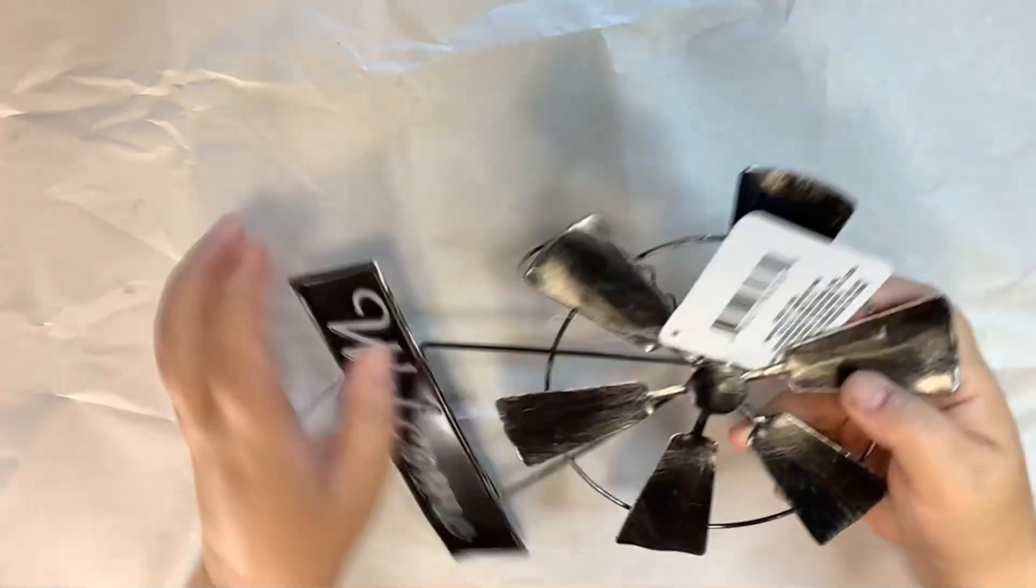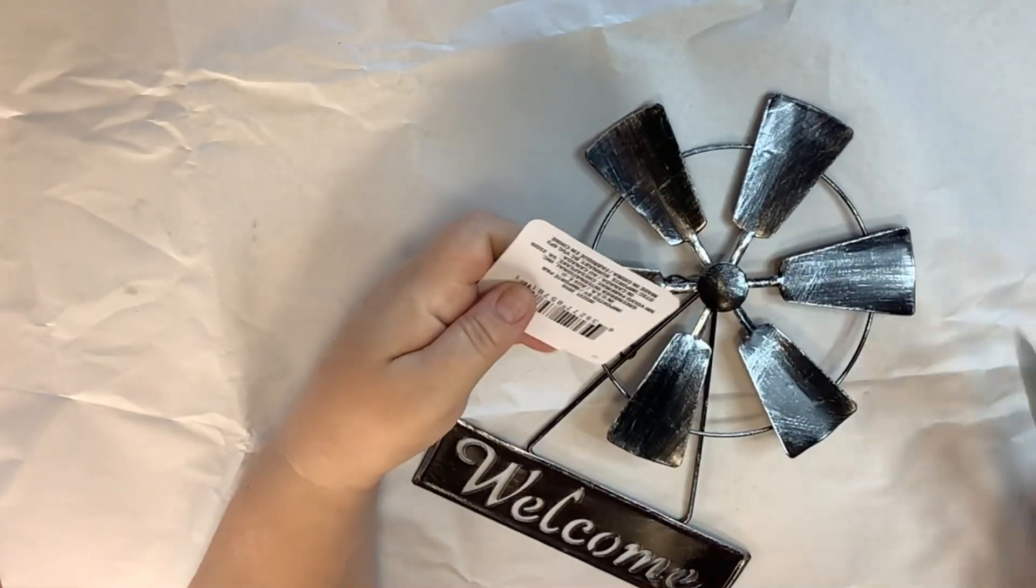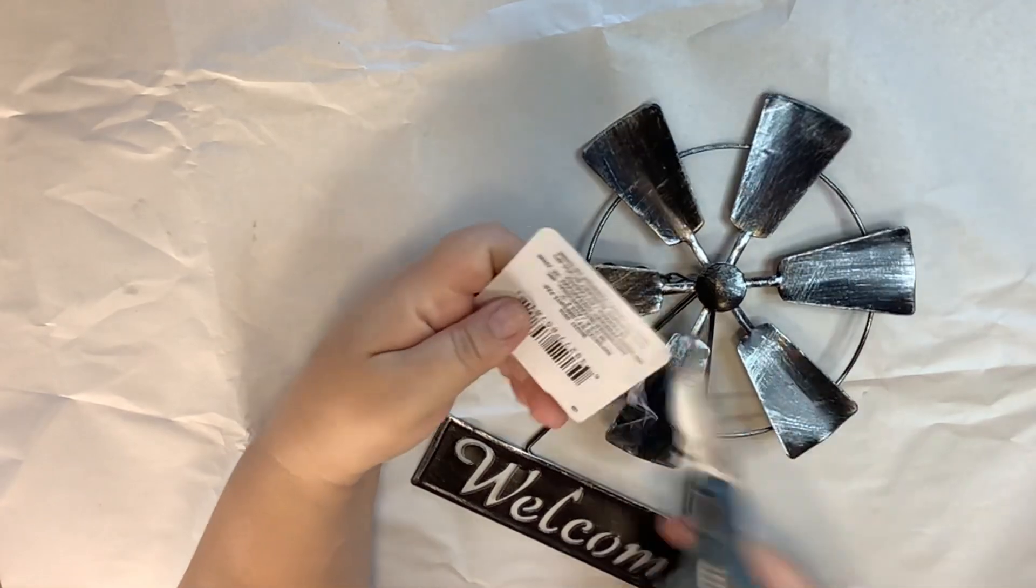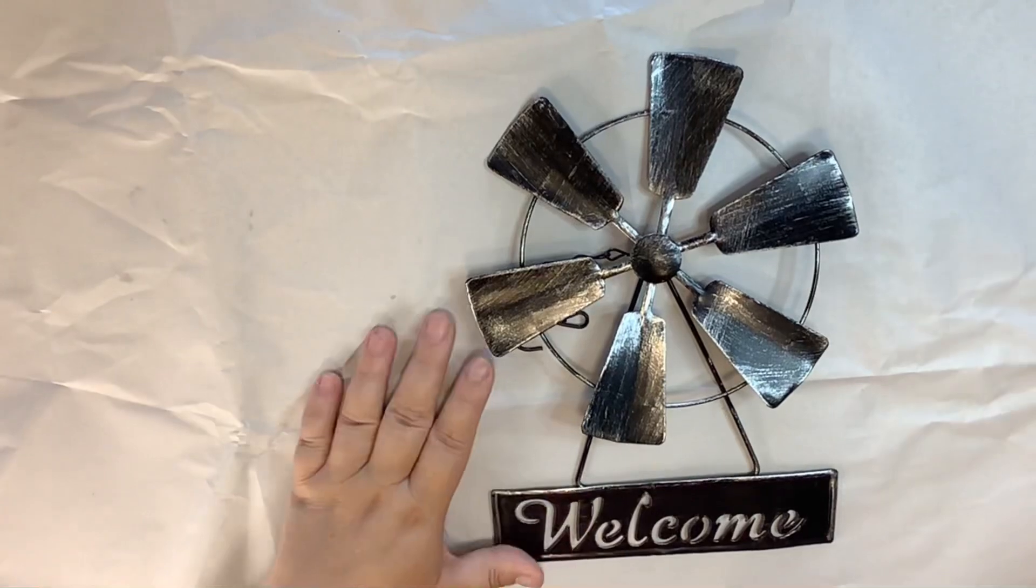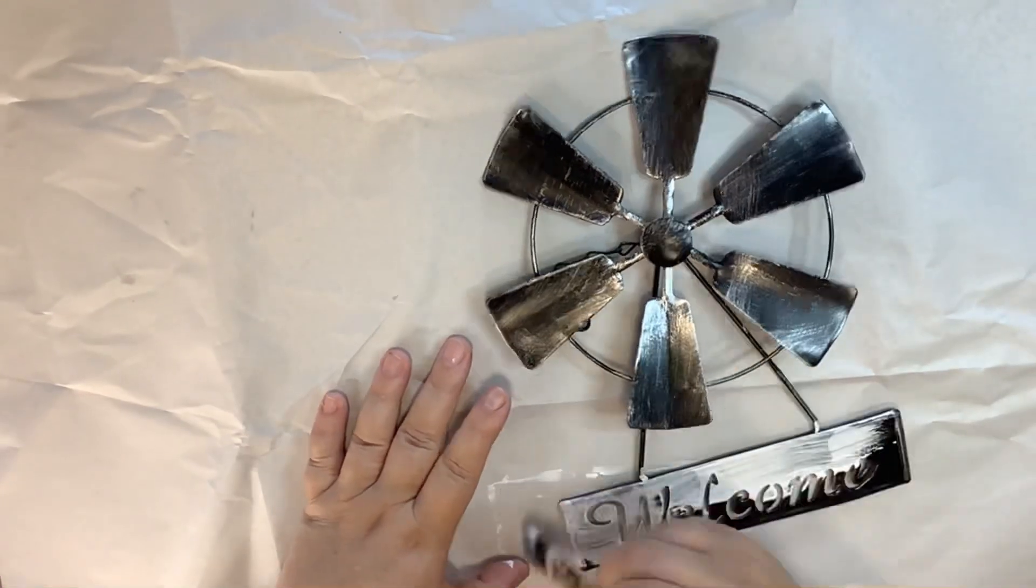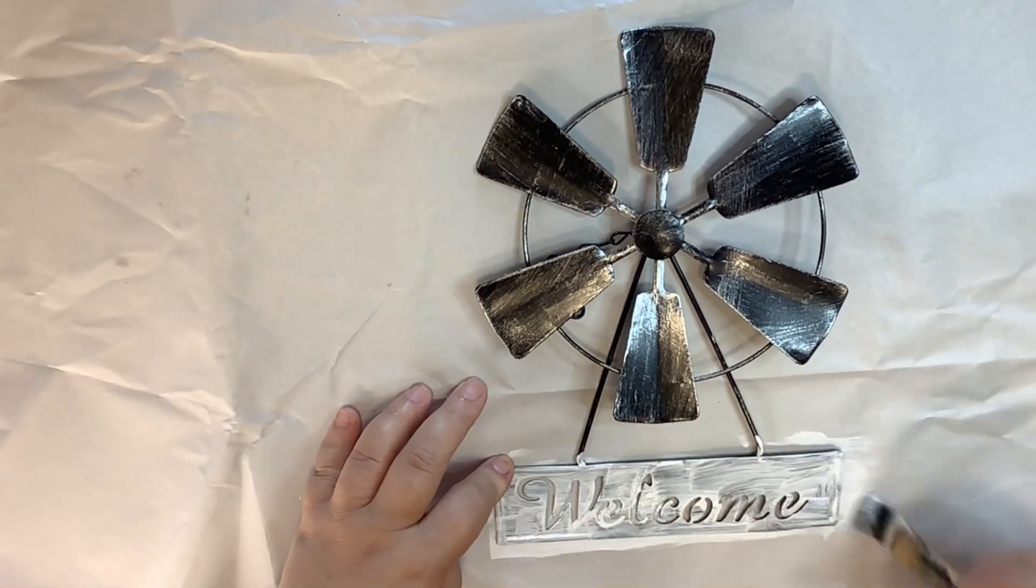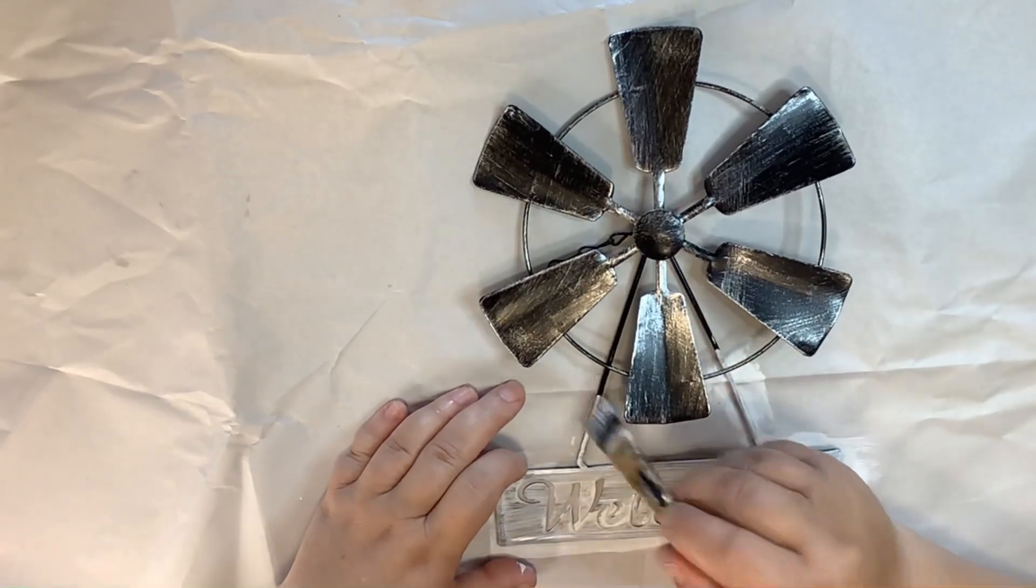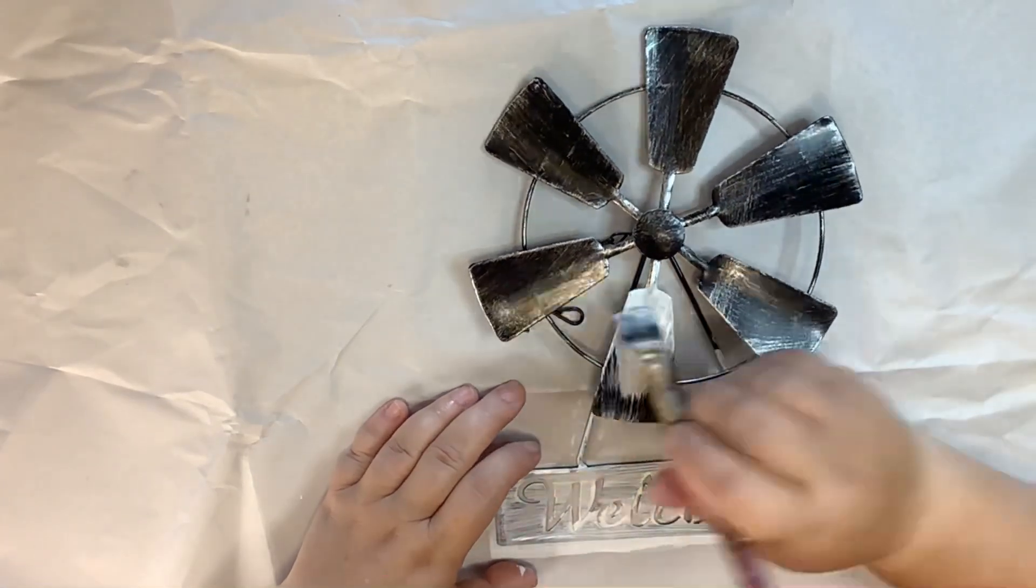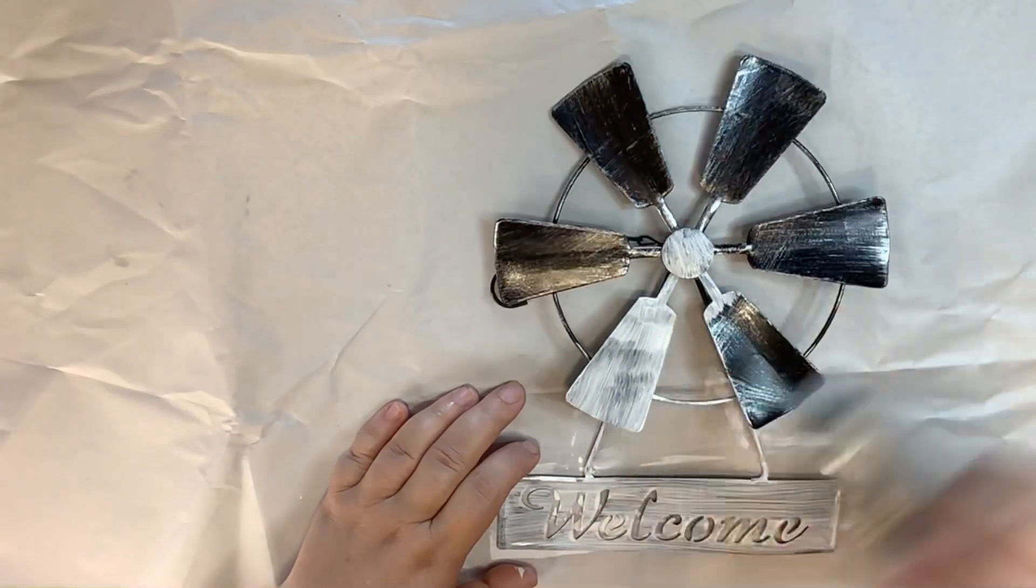The first thing I'm going to do on DIY number one is take this windmill welcome sign from the Dollar Tree. We're going to cut the tag off and then we are going to give this two good coats of Waverly chalk paint in white. We do paint the fan blades also even though we're going to cover those, but I do want to go ahead and get them all covered up.